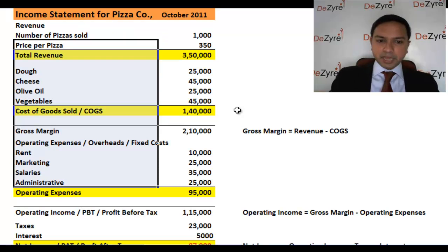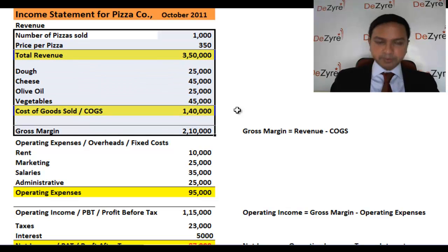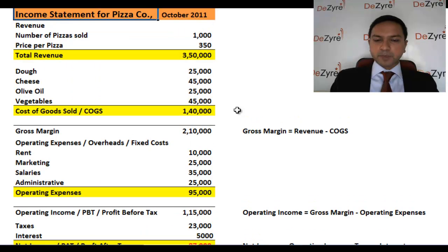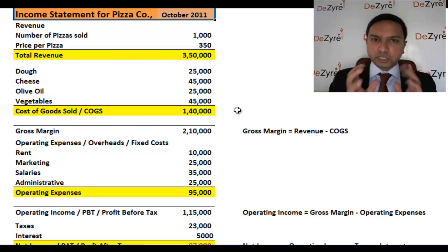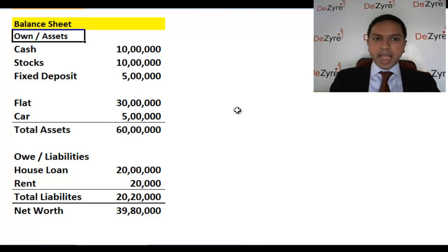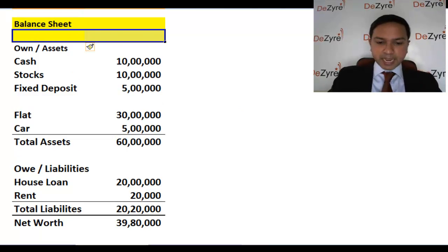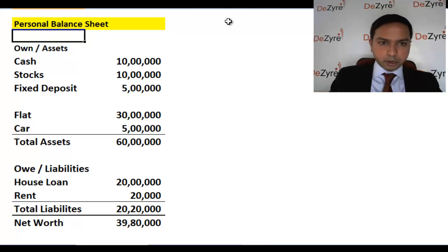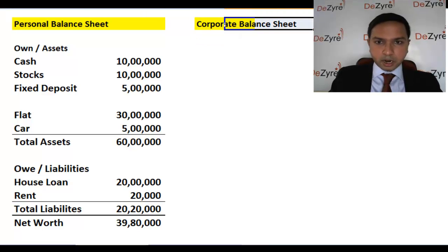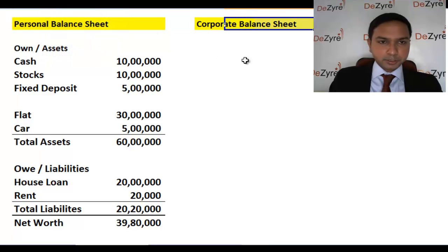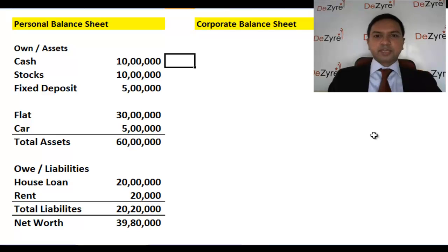This balance sheet, along with your monthly income statement, gives a complete holistic view of your financial situation. Similarly, a company also has a simple income statement, but just like in your case, the income statement does not give the entire snapshot of a company — it's just one aspect. A company has its own balance sheet too. Let's draw these side-by-side so you can see there's not a world of difference between your personal balance sheet and a company's balance sheet.